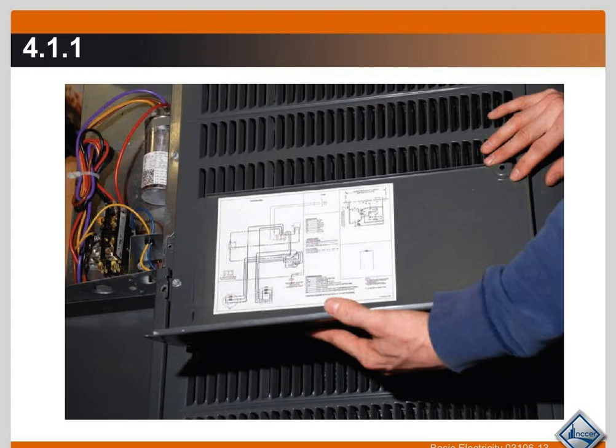Most of the equipment that you're going to be working on will have some type of wiring diagram, schematic diagram, ladder diagram, or a combination of all three. They're found on the inside cover of the condensing unit, the air handler, or if it's a rooftop unit, sometimes there are packets of information in there as well.